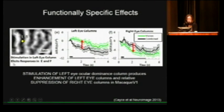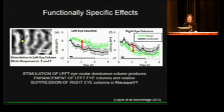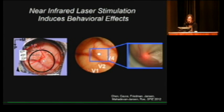We wanted to stimulate single functional domains. In one experiment we stimulated a single left eye ocular dominance column and showed enhancement of left eye columns with relative suppression of right eye columns — consistent with the previously known push-pull relationship between left and right eye columns. This confirms that we can achieve functionally specific effects with this kind of stimulation.